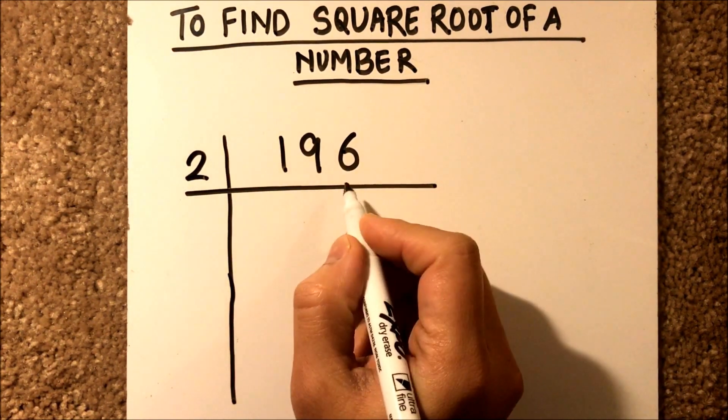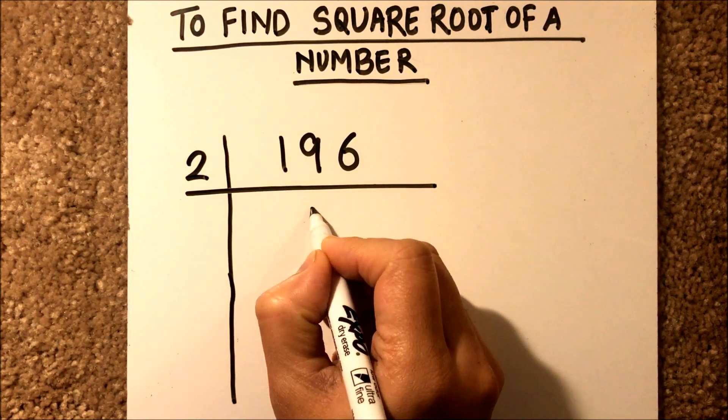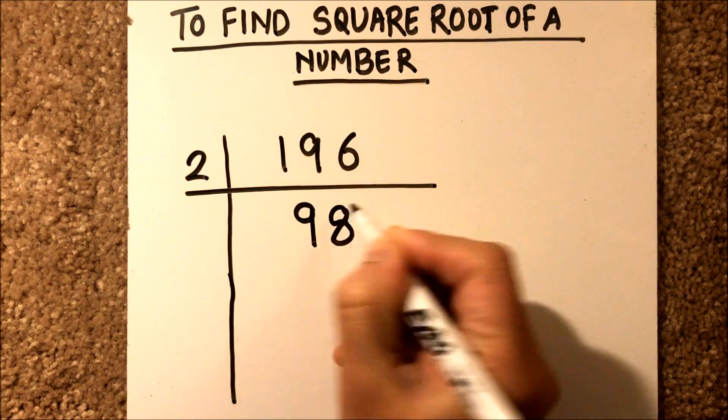So we will divide 196 by 2. 2 times 9 is 18, and 2 times 8 is 16.